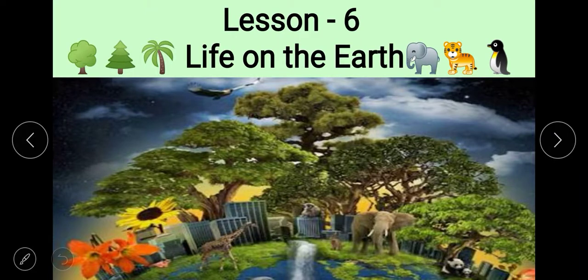Good morning and welcome everyone to the social science class. We are discussing lesson 6 of geography and the name of the lesson is 'Life on the Earth.' In the previous video, we already discussed the tropical hardwood forest, including the tropical evergreen forest which remains green throughout the year, the tropical deciduous forest which sheds leaves in the dry season, and tropical and temperate grasslands. Today we will discuss the next point of this chapter.